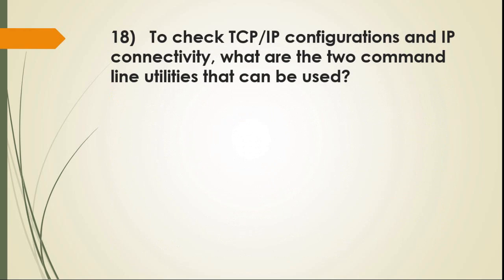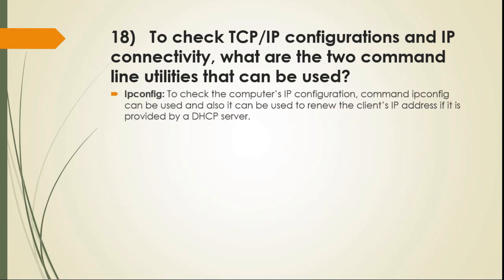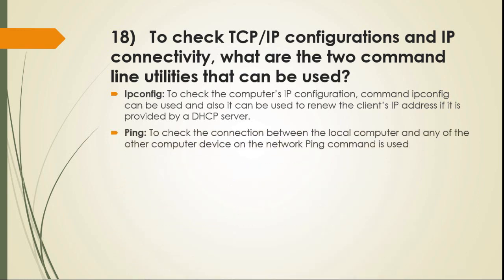Question 18: To check TCP/IP configurations and IP connectivity, what are the two command line utilities that can be used? First, IP protocol configuration (ipconfig): to check the computer's IP configuration, the ipconfig command can be used, and it can also be used to renew the client's IP address if it is provided by a DHCP server. Second, to check the connection between the local computer and any other computer device on the network, the ping command is used.